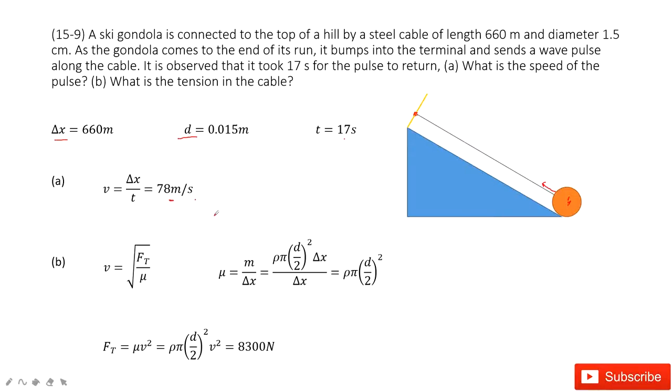Now the question asks you for the tension in the cable. This is a little bit difficult, but we can consider there. As we learned, the wave speed for the cable is the square root of ft over mu. ft is the tension, and mu is the density. v is given from question A, and ft we need to find, so we need to find the mu first.